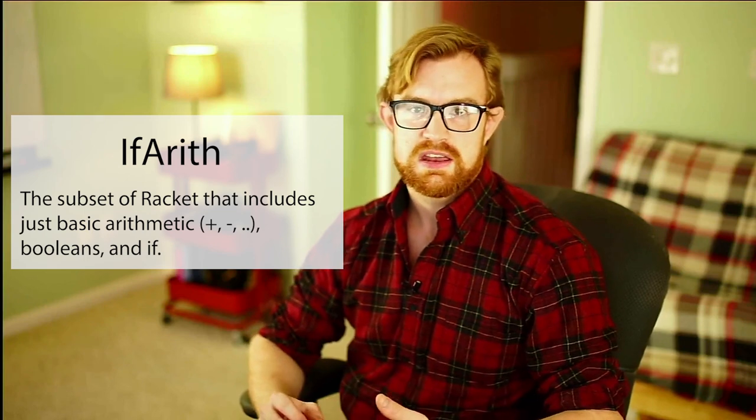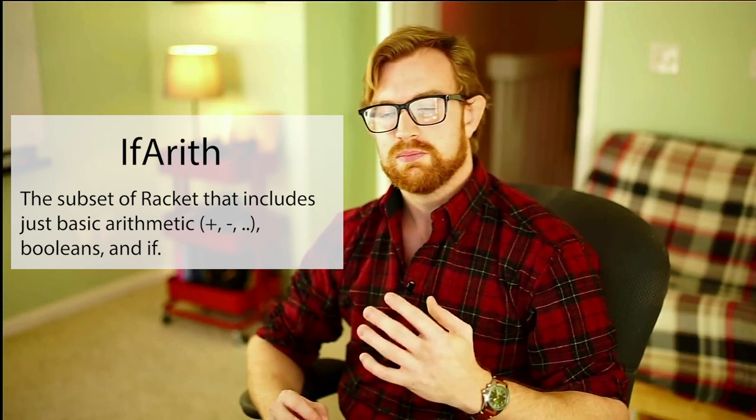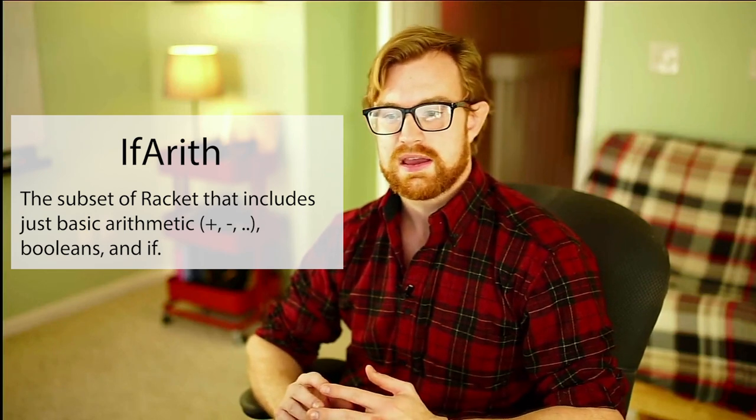I'm going to focus today on a language that I'm going to call if arith. If arith is just the subset of scheme that we've seen so far that includes numbers, booleans, and primitive arithmetic and boolean operations along with if. We'll see how we can use textual reduction on the board to specify precisely how to execute programs that use this subset of racket. Pretty soon we'll also be building interpreters that actually implement using the computer's machinery the same thing as we'll see on the board today. Textual reduction is not the most efficient way to implement an interpreter but it's a good way to start because it gives us nice ground truth that allows us to simply understand how the program executes. In fact when I think about how a program executes I really follow this model myself.